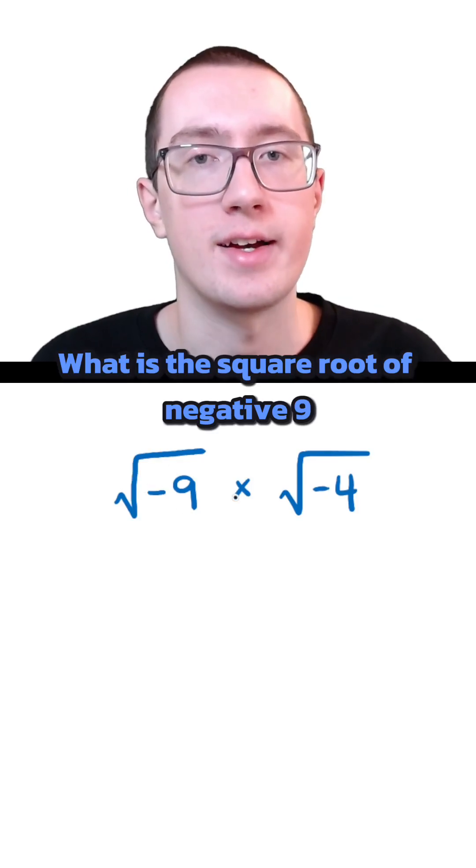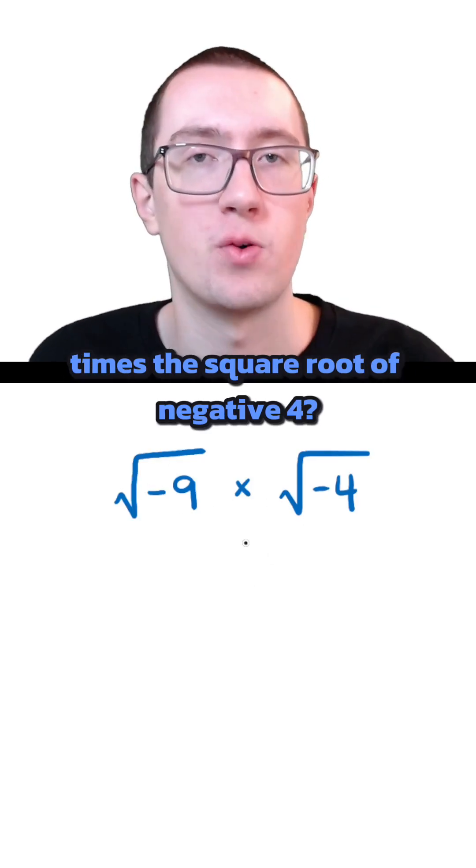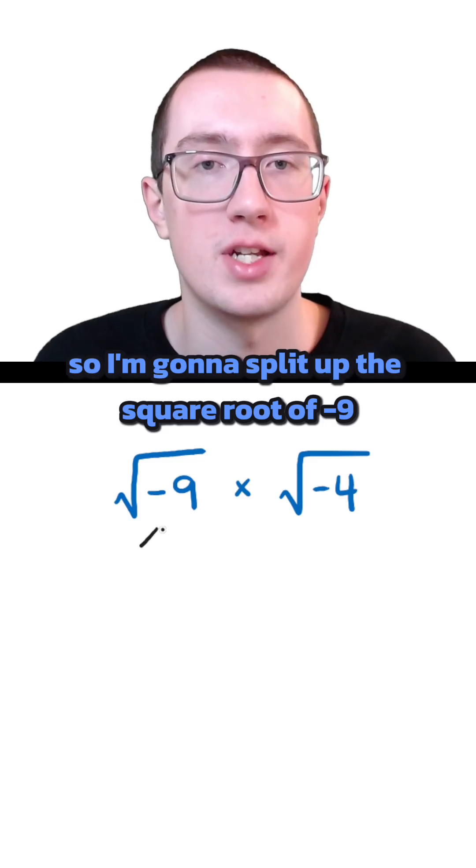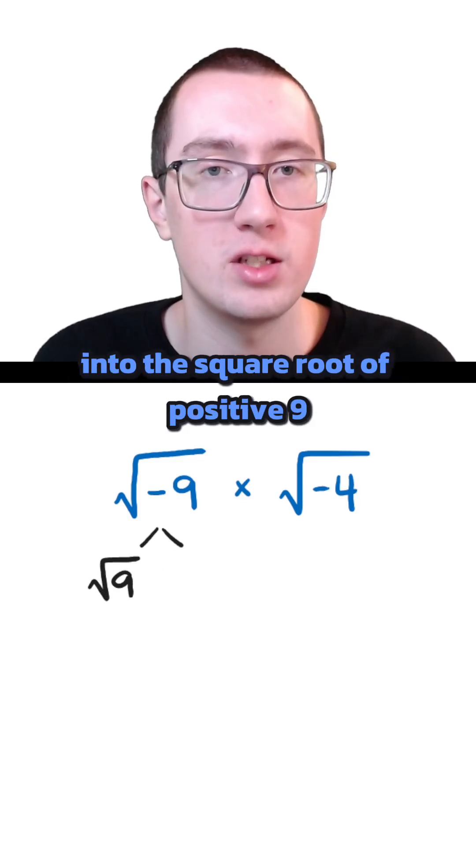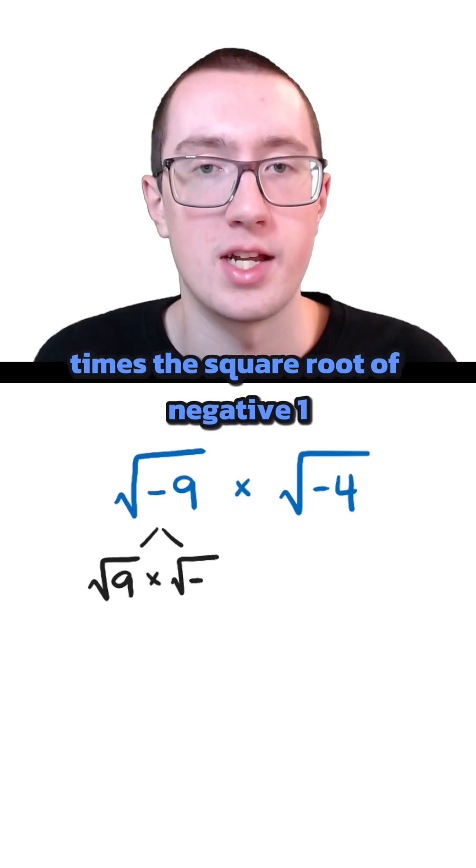What is the square root of negative 9 times the square root of negative 4? So I'm going to split up the square root of negative 9 into the square root of positive 9 times the square root of negative 1.